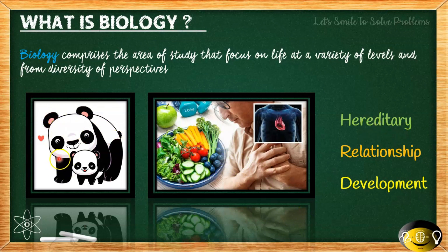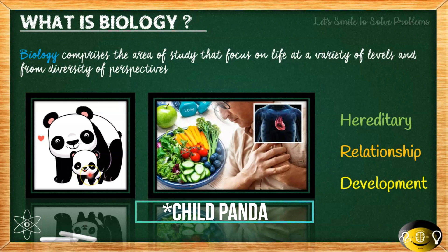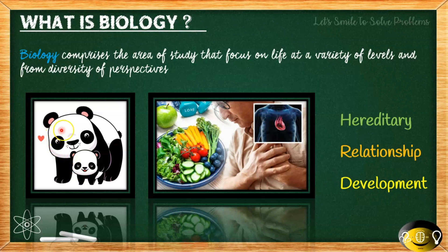Let me explain hereditary using the pictures. Here we see a child polar bear — it will have the same eye color as its parents and a similar fur color. That is because hereditary material, or genes, transfers from one generation to another, which is an essential aspect of biology.